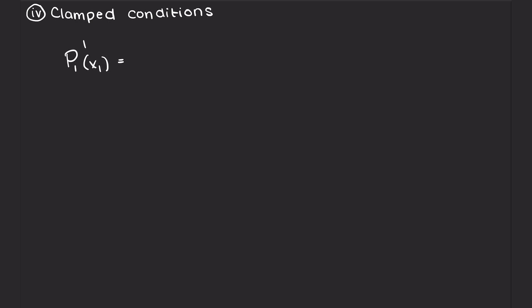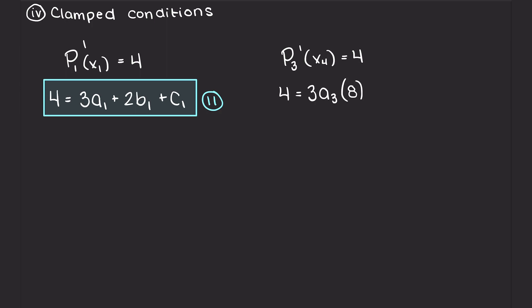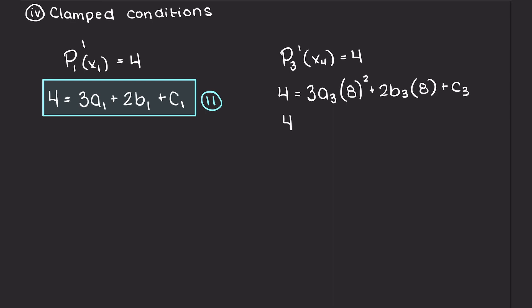In a clamped cubic spline, we will use some known facts about the rate of change at the endpoints of our interpolating function. As we were told in the beginning of our question, assume that the rate of change at points x1 and x4 are 4. So let's just go ahead and use our previously calculated first derivative of P1 and P3 at points x1 and x4 respectively to get our remaining two equations.